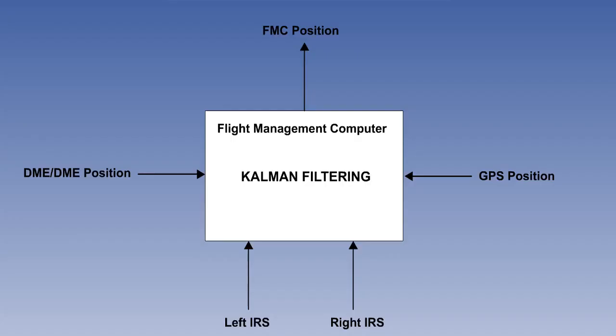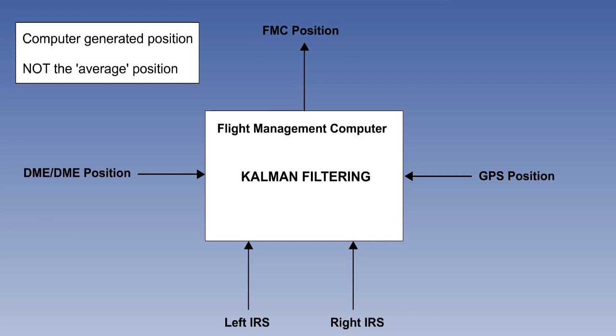However, the later generations of inertial systems are only one of several sources of position in a flight management system. And a statistically most probable position is computer-generated by the Kalman filter in the FMS. However, the FMC position is not the average. This concludes our study of INS. The next lesson goes to look at its successor, the IRS.